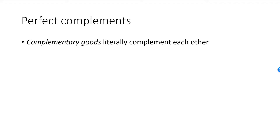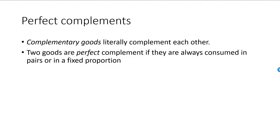For substitutes you want good one or good two, while for complements you want good one and good two. Two goods are perfect complements if you always consume them in pairs or in any other fixed proportion. For example, if you cannot touch a piece of sushi without adding a piece of wasabi, and you only consume wasabi with sushi, then these two goods are perfect complements.